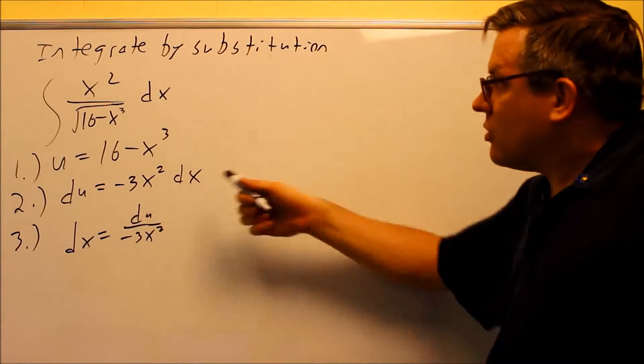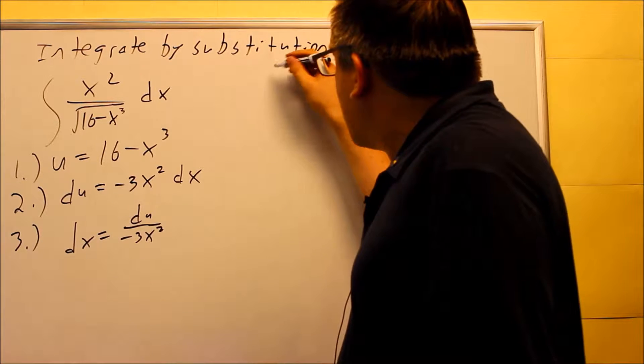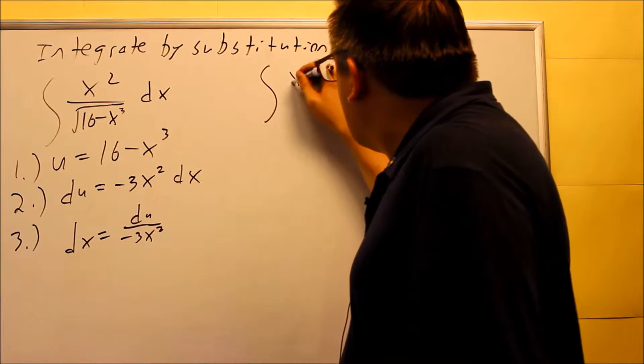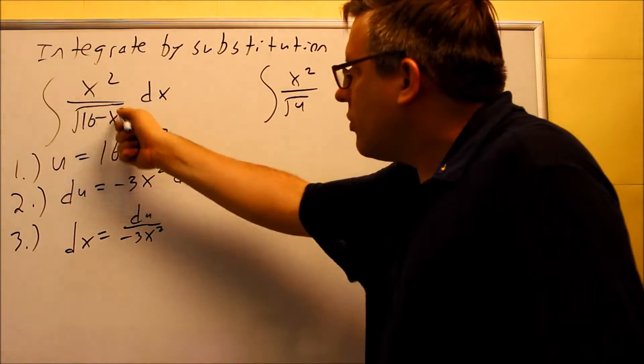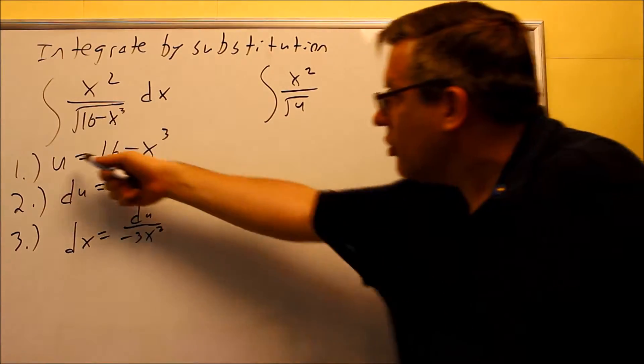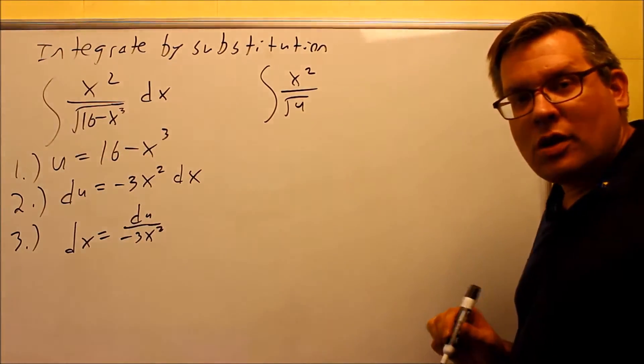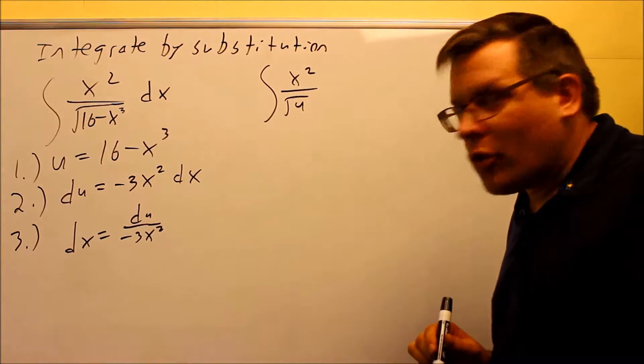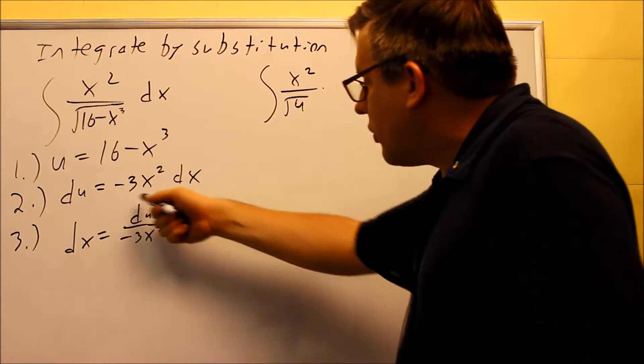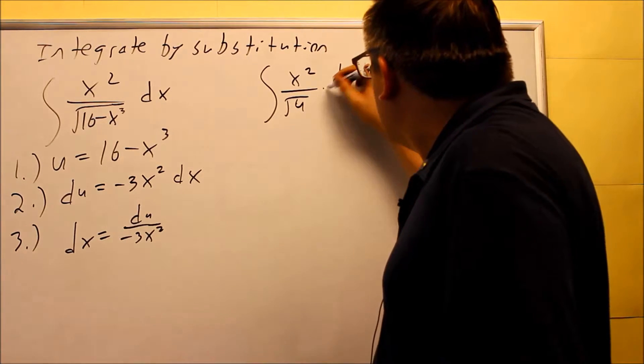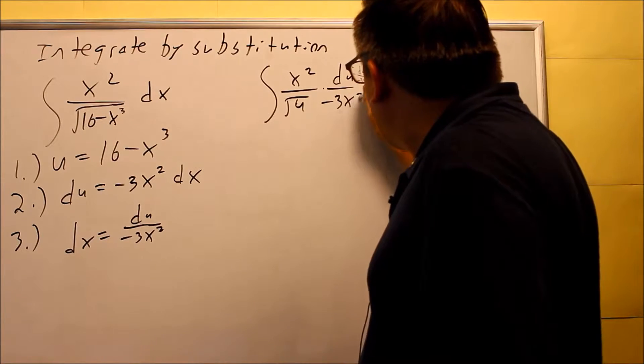We're now ready to put this into our integral. We substitute it back in, we're still doing step three here. You have x squared over, we're going to replace the 16 minus x cubed with u, because that's what our original substitution was we identified there in step one. And then you're going to also replace the dx with this expression here, that's du over negative three x squared.